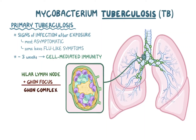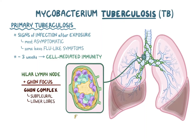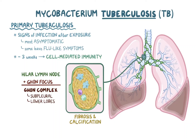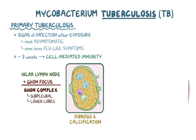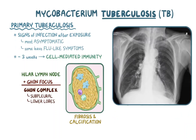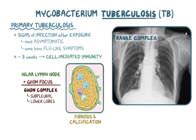Ghon complexes are usually subpleural and occur in the lower lobes of the lungs. The tissue that's encapsulated by the granuloma undergoes fibrosis, and often calcification, producing scar tissue that can be seen on x-ray. This calcified Ghon complex is called a Ranke complex.